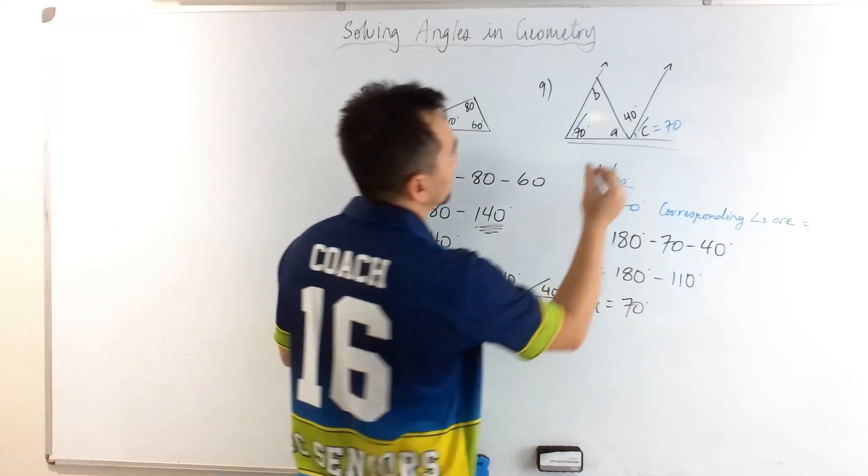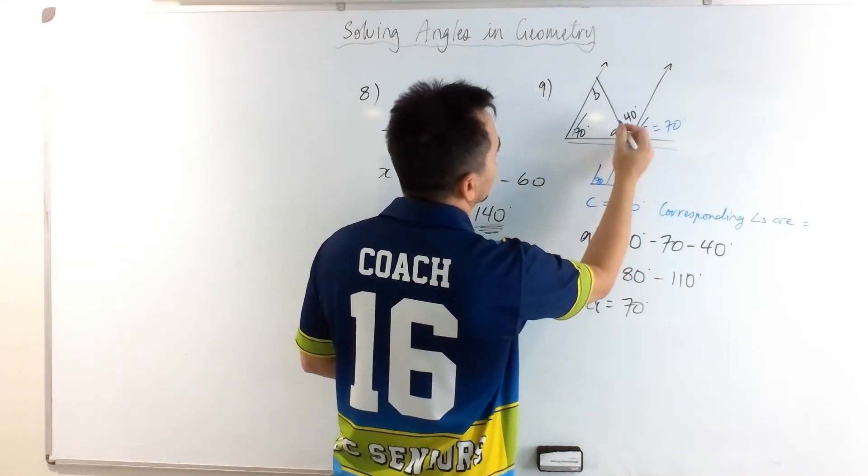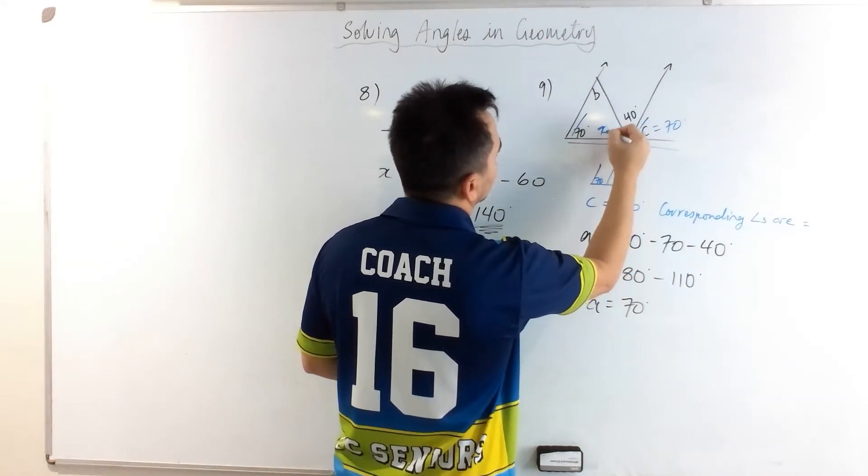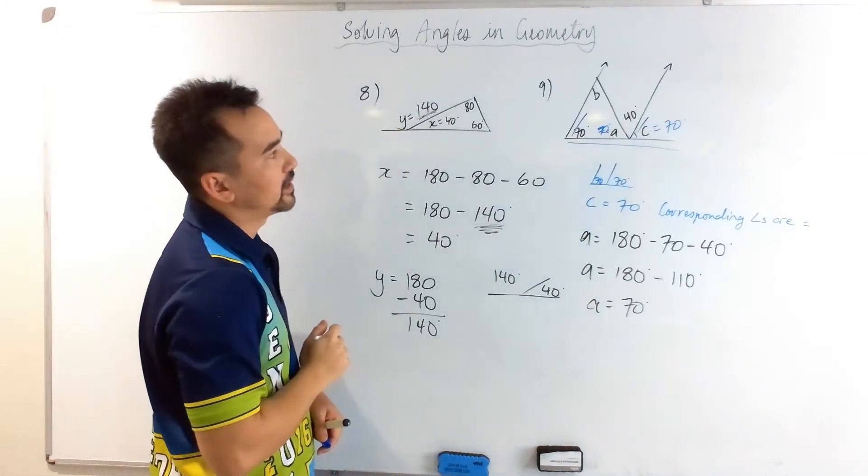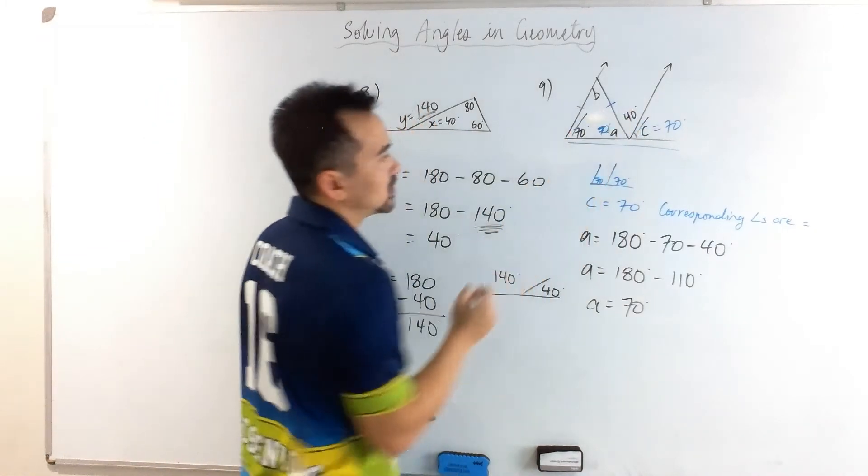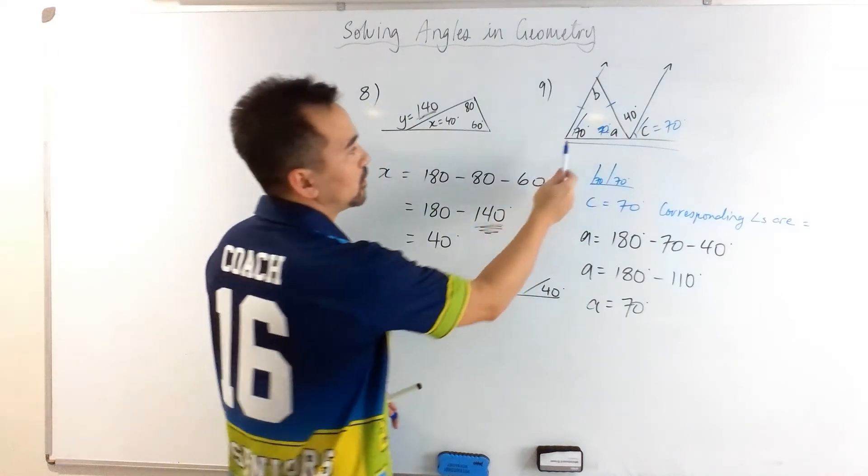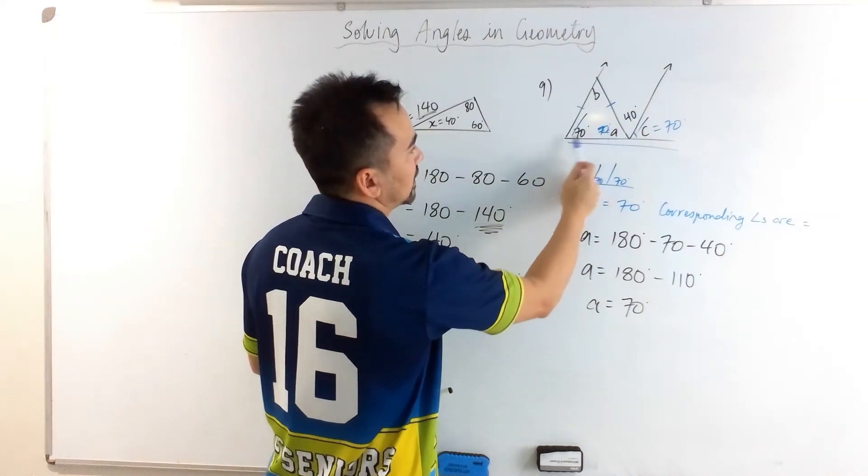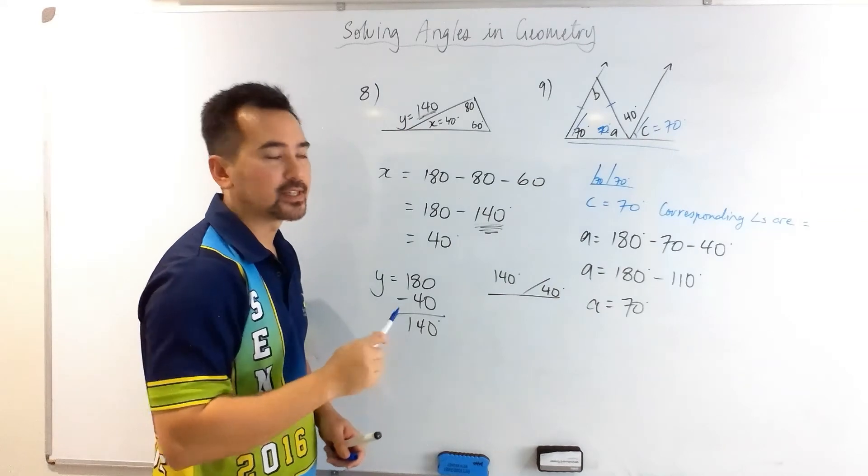Okay, so if this here is 70, then that means this triangle is an isosceles triangle, where the two angles at each corner are both the same value.